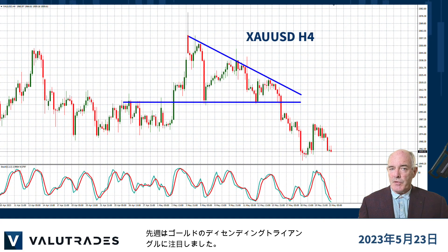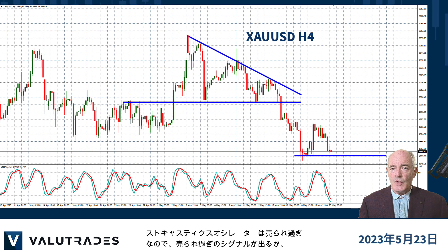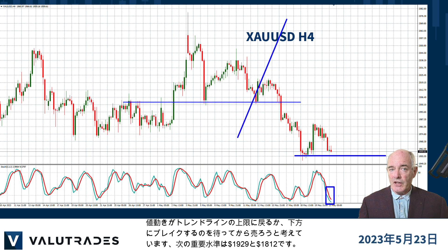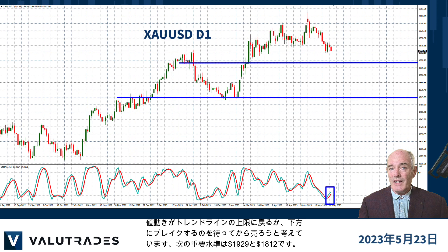Last week, we spotted this descending triangle on gold. Price action broke through support and fell to this key level at $1958. We see that the stochastic oscillator is oversold, so we'll wait for an overbought signal, price action to return to the upper trend line or break below before selling, where the next key levels below are $1920 and $1812.